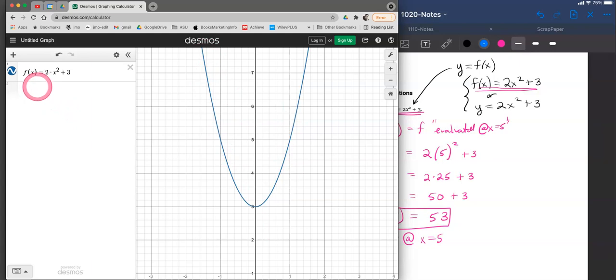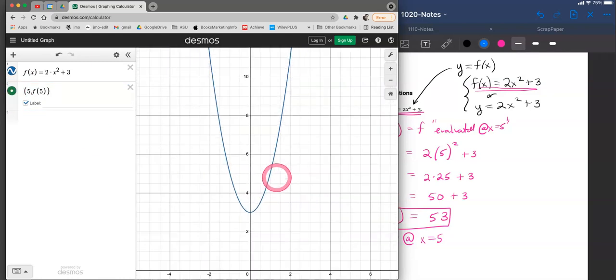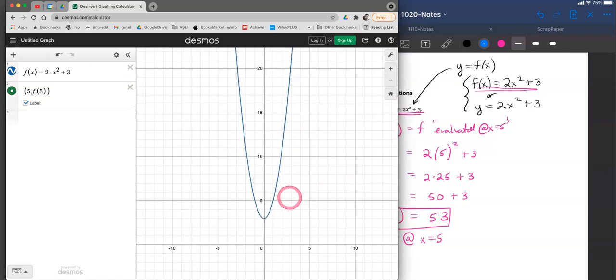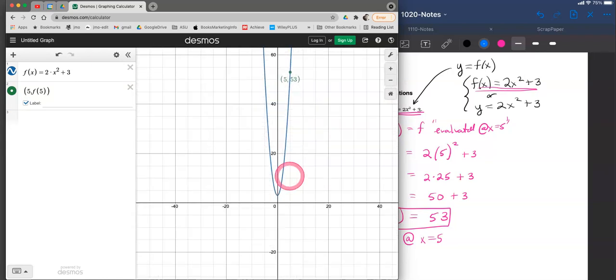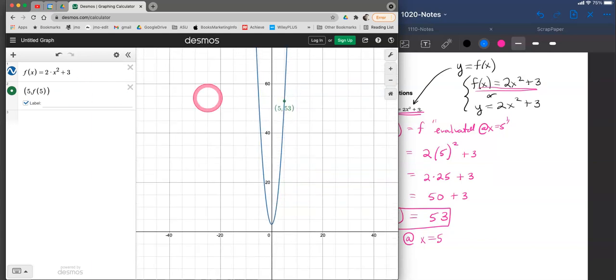So when we talk about a solution to this equation, one can say, make the point 5. That's the x value, and the y value will be the function evaluated at 5. And one could create a label of that on the graph. And one can then see, if we zoom out some, right here, if we zoom out quite a ways, there is 5, 53. That is a solution to this particular equation, y is equal to 2 times x squared plus 3.